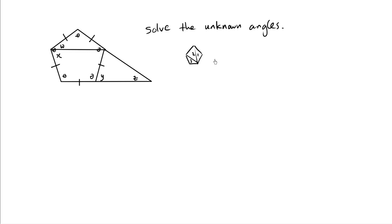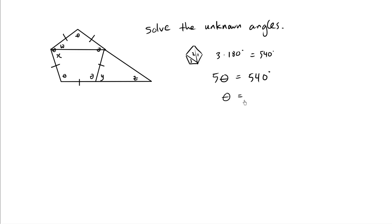We know that each triangle has 180 degrees. So the total angle is going to be three times 180 degrees, which equals 540. So the total angles inside this pentagon is 540. Another way of writing that is 5 theta. So 5 theta equals 540 degrees. We divide both sides by 5 to come up with 108. So theta is 108 degrees.